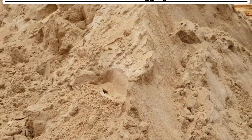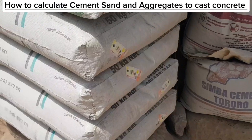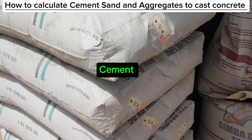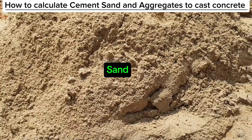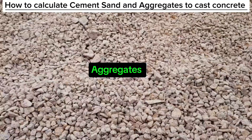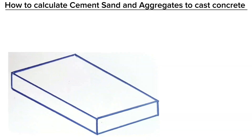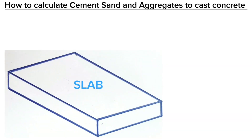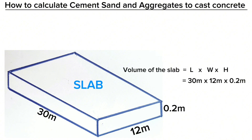You are going to learn how to calculate the quantity of cement, sand and aggregates required to cast concrete. Considering a slab of 30 meters along the length, 12 meters along the width and 200 millimeters slab depth, the volume of the slab is equal to 72 cubic meters.